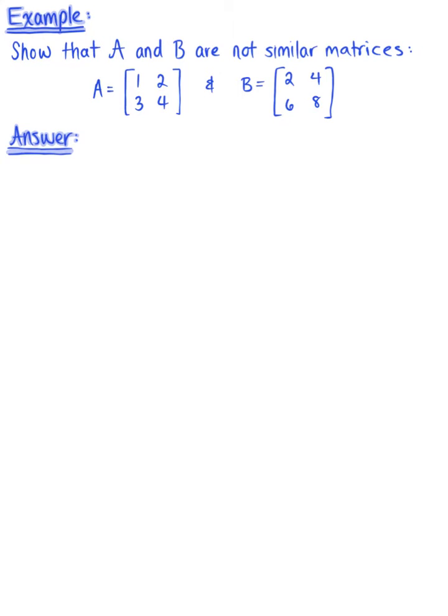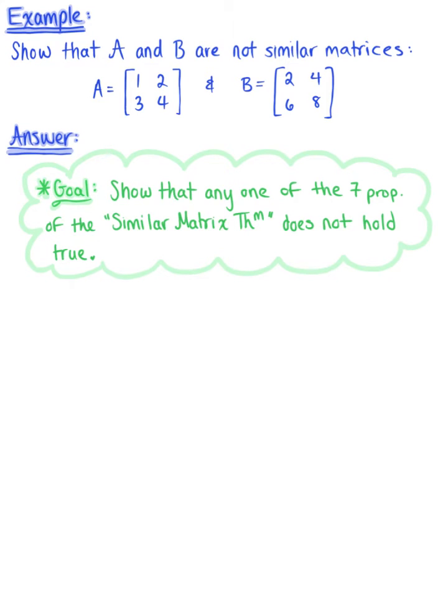Show that matrix A and matrix B are not similar matrices. In order to show that these two matrices are not similar, all we need to do is show that any one of the seven properties found in the similar matrix theorem is not going to hold true.